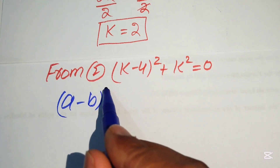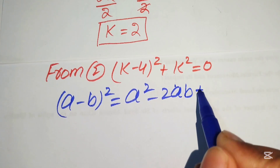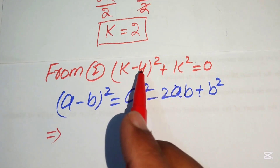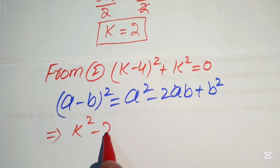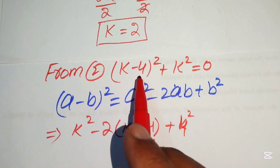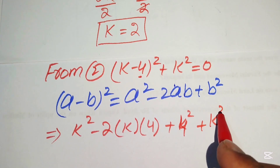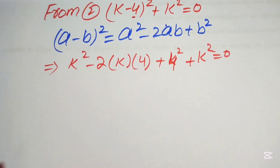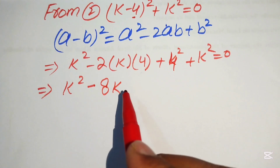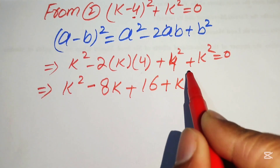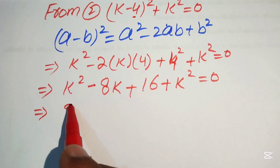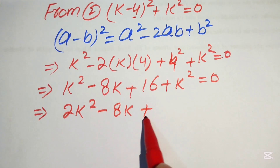We expand (k − 4)² using the identity (a − b)² = a² − 2ab + b², giving k² − 8k + 16 + k² = 0. Combining like terms: 2k² − 8k + 16 = 0.